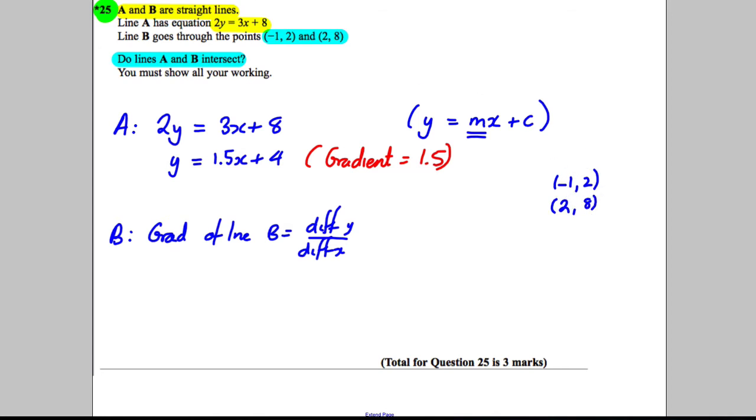Actually, what I'll do is put the 2 and 8 above. It just makes my calculations slightly easier. Difference in y's is 8 subtract 2. Difference in x's is 2 subtract negative 1. So this is going to be 6 divided by 3, which equals 2.